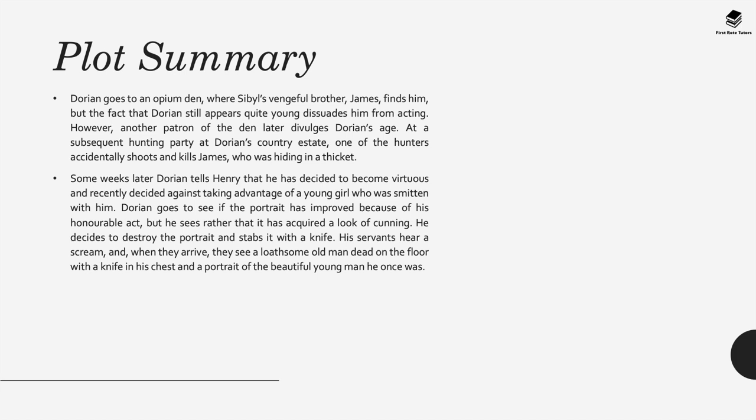Later Dorian goes into an opium den where Sybil's vengeful brother James finds him. However the fact that Dorian still appears quite young dissuades him from acting on his anger. Somebody who works in the den later tells James Dorian's true age and James realises he's been misled. At a subsequent hunting party at Dorian's country estate, one of the hunters accidentally shoots and kills James, who was hiding in a thicket. Some weeks later Dorian tells Henry he's decided to become virtuous and recently declined to take advantage of a young girl smitten with him. Dorian goes to see if the portrait has improved but sees it has acquired a look of cunning. He ultimately decides to destroy the portrait and stabs it with a knife. His servants hear a scream, and when they arrive they see a loathsome old man dead on the floor with a knife in his chest, while the portrait now shows the beautiful young man he once was.